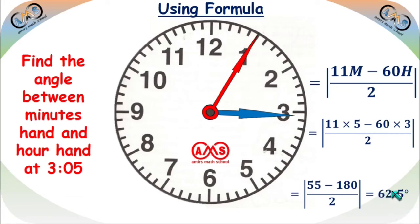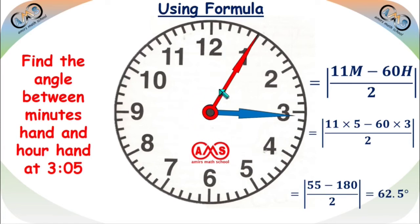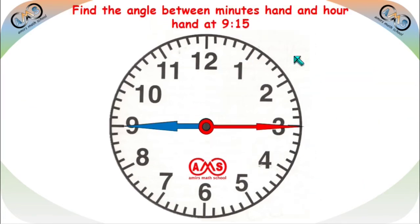If we subtract this value from 360 degrees, we get the other angle — the outer angle — which is 297.5 degrees. Let's see another example.